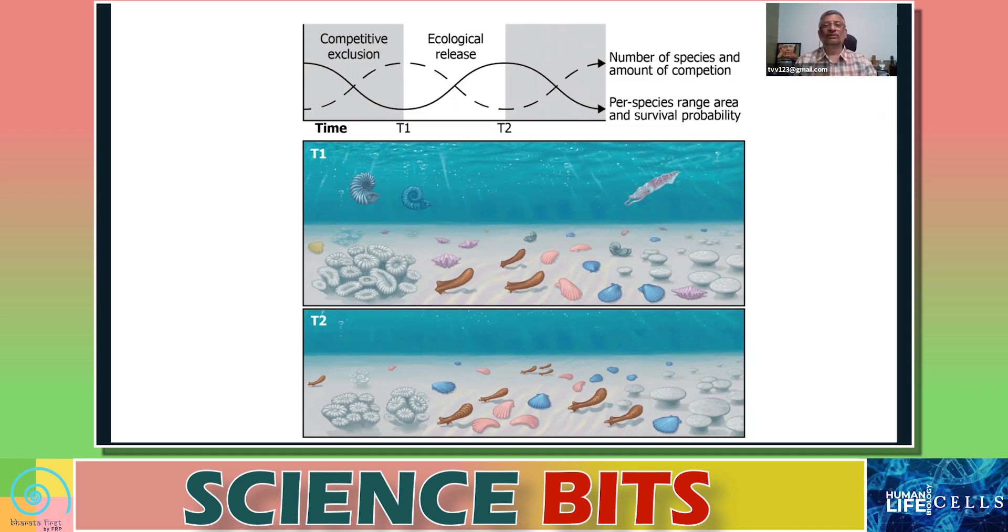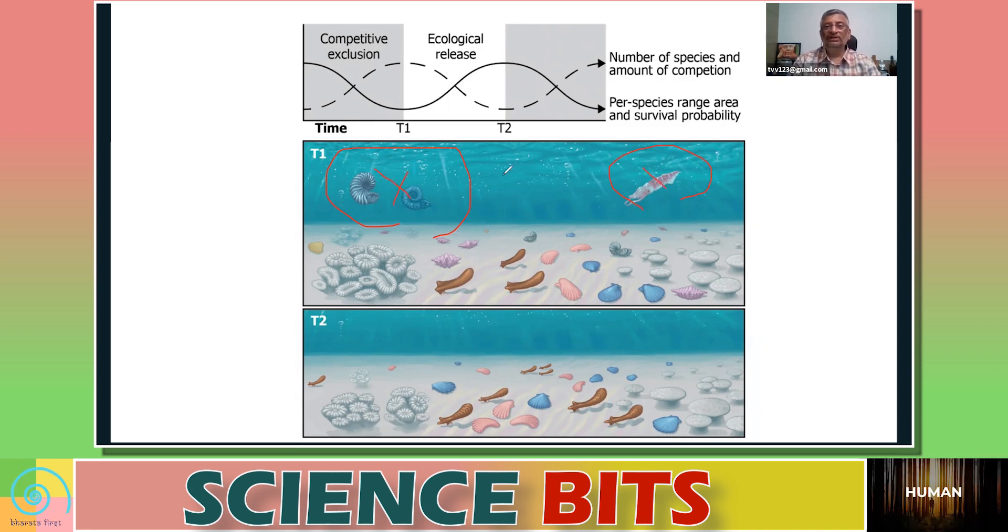But at times what happens is that large number of species go extinct in a short period of time, I mean short from a geological point of time. Like for example if you look at a time T1 and time T2 in a particular ecosystem, you had species like this which are missing in T2. This species is missing in T2. So they have become extinct within these two periods. So when these numbers change substantially, large number of species go extinct together at the same time. That's what we call as mass extinction.